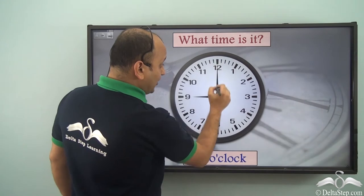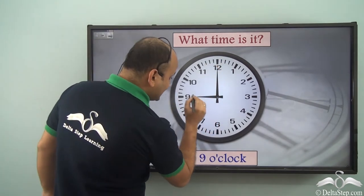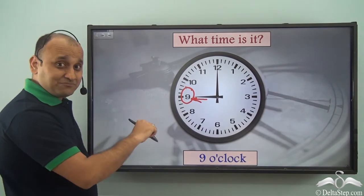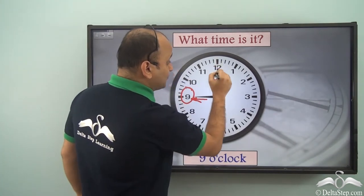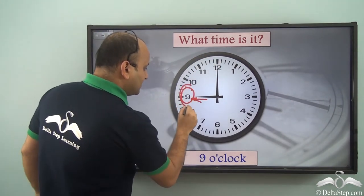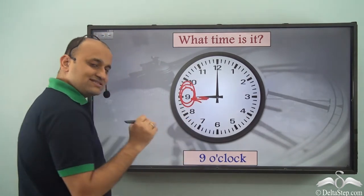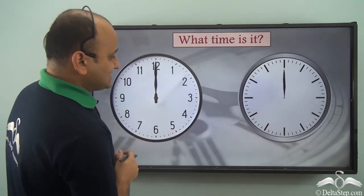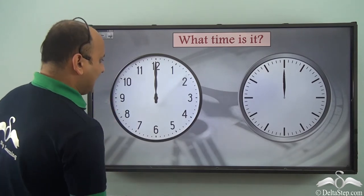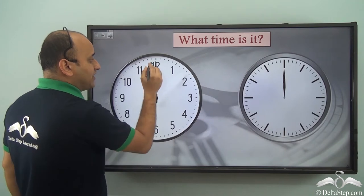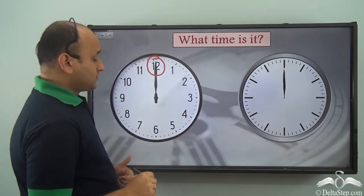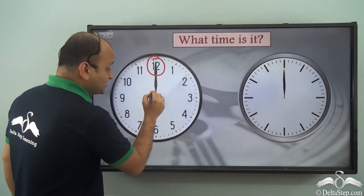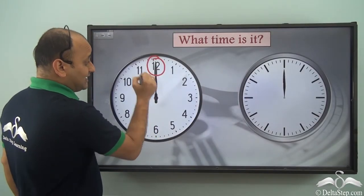When the smaller hand, which defines the hour of the day, is pointing to a certain digit, and at the same time the longer hand is pointing to twelve, then the number pointed by the smaller hand is the hour of the day. So in this case it is nine o'clock. Here both the smaller and longer hands are pointing to twelve, so it is twelve o'clock.